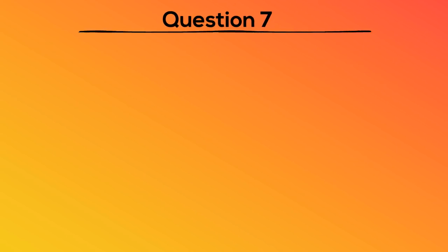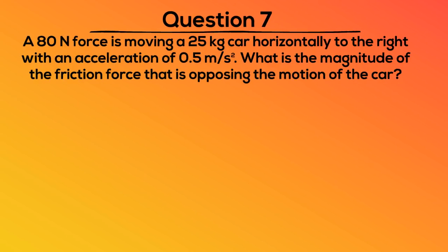Question 7. An 80 newton force is moving a 25 kilogram cart horizontally to the right with an acceleration of 0.5 meters per second squared. What is the magnitude of the friction force that is opposing the motion of the car? A. 67.5 newtons. B. 71.3 newtons. C. 153.7 newtons. Or D. 61.8 newtons.